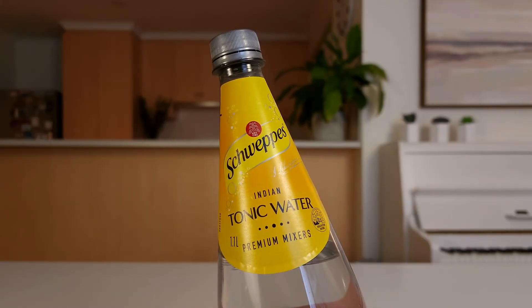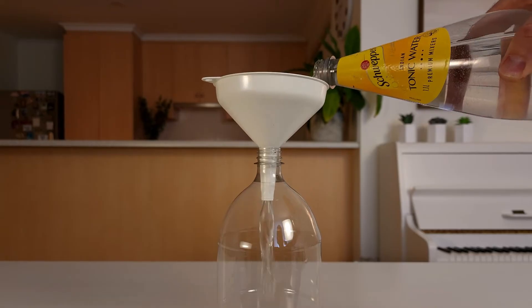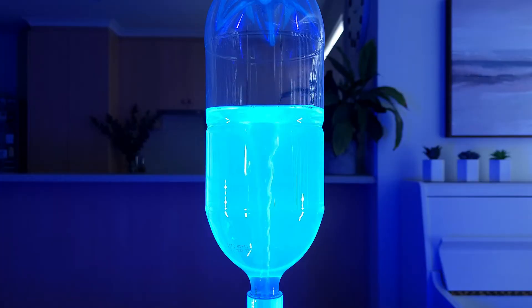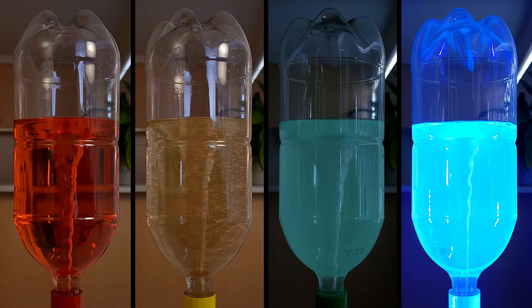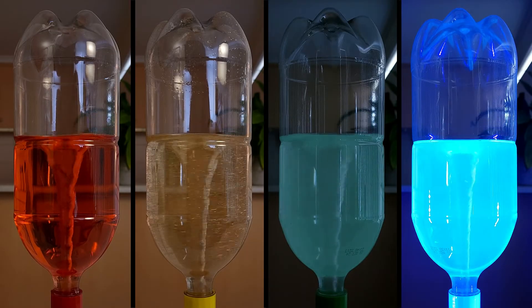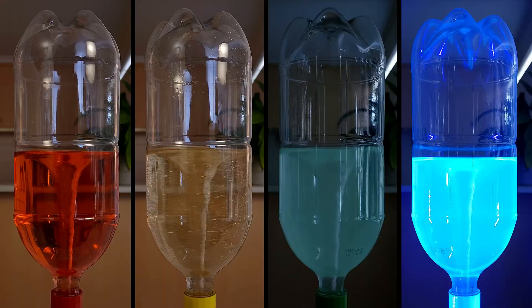And idea 4: filling the bottle with tonic water instead of regular water, and using a UV light to make it glow! Let me know which one you liked best, and if you tried anything else for your tornado in a bottle!